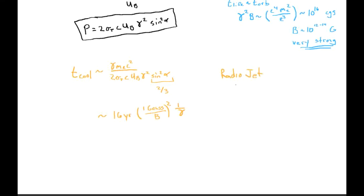For a radio jet with B ~ 1 milligauss and gamma ~ 1000, the cooling time is of order 10,000 years. This is roughly comparable to the dynamical time for something moving at the speed of light to cross a kiloparsec-scale jet length, which also works out to about 10^4 years — a satisfying consistency check.